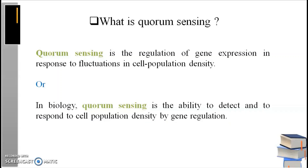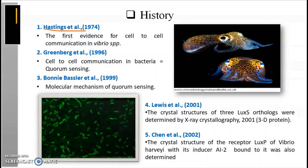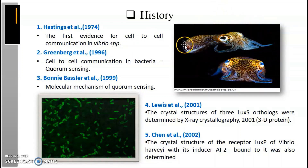Before explaining this definition, I want to give you a historical overview of how we got the idea that bacteria can talk to each other. First, Hesting in 1974 made an amazing observation — he noticed two bioluminescent bacteria from the ocean that made light. He noticed they only made light when they were at high cell density. Here is an image showing the light-emitting property of Vibrio fischeri. The second one, in 1996, Greenberg discovered cell-to-cell communication in bacteria, that is quorum sensing.